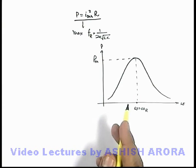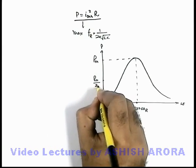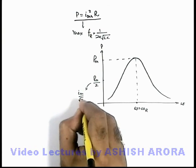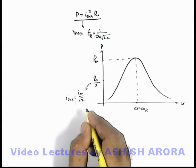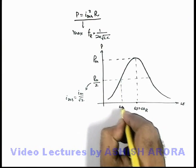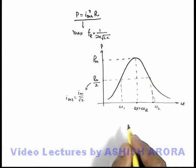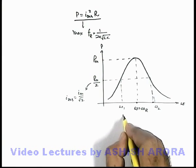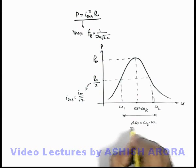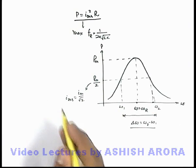Similar to this situation, we define an important concept: the frequency where power reaches half of the maximum. This is the situation when I_rms equals I_max divided by root 2, because when I_rms equals maximum by root 2, the power will be half of the maximum. This happens at two frequencies — omega_1 and omega_2. These are the two frequencies where power is at half-maximum, so the range of these frequencies, defined as delta omega equals omega_2 minus omega_1, is the range within which power remains above half of the maximum.